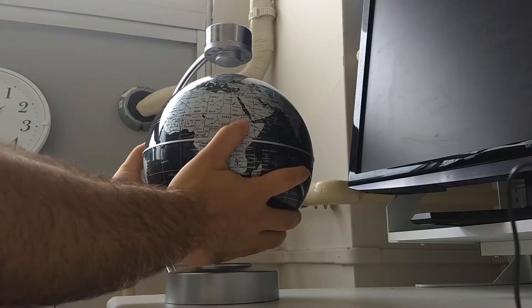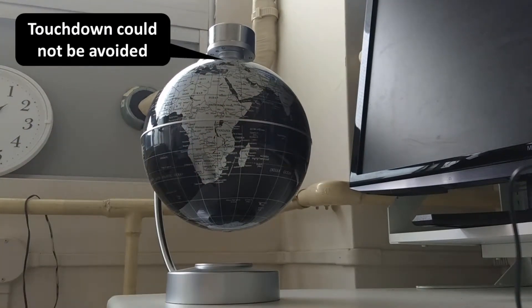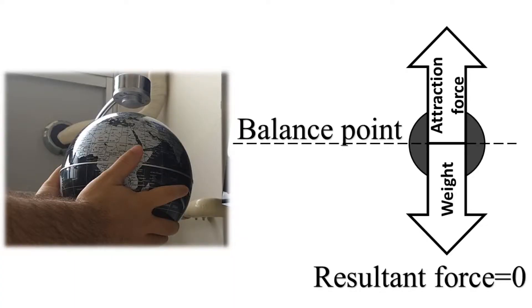So, it should be possible to make this globe levitate in thin air if we found a position where the attraction force is equal to the globe's weight.